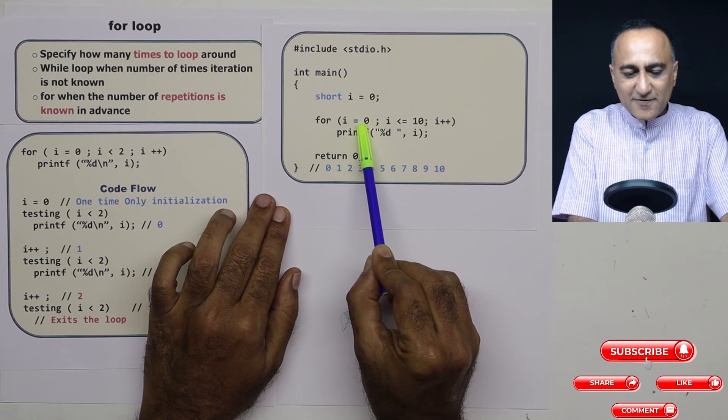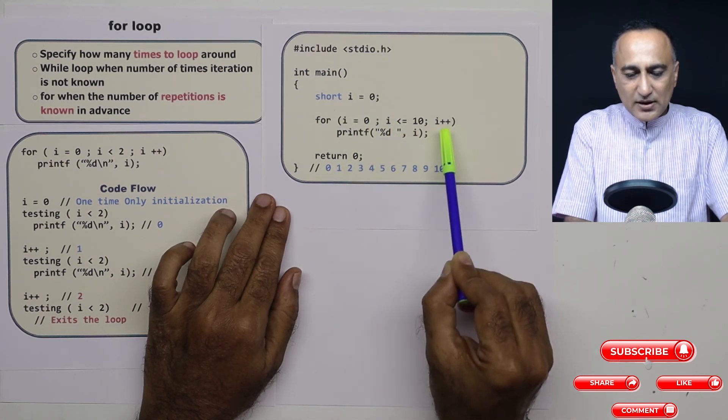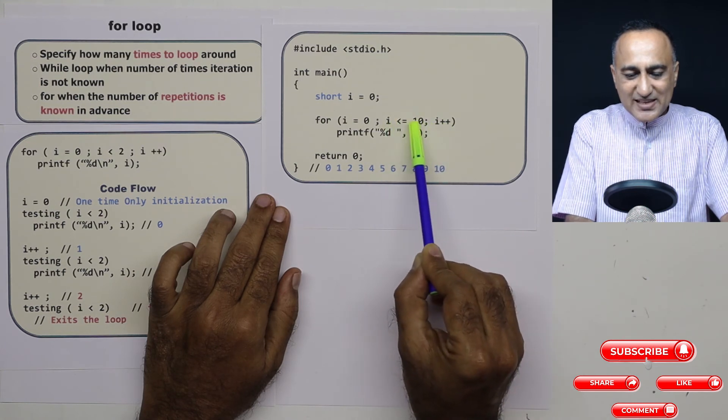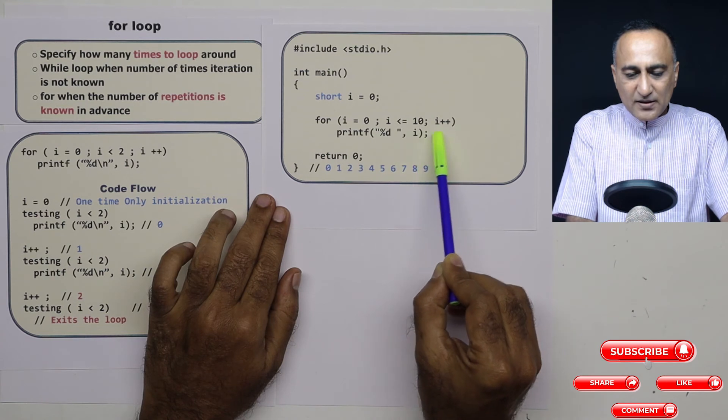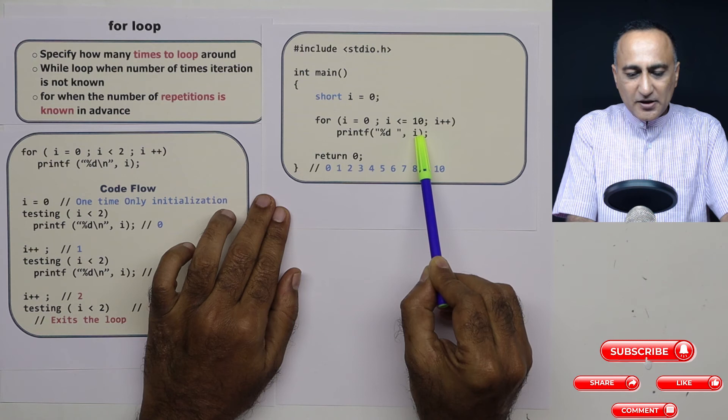So it will do the initialization first time, check the condition, print i as zero. Increase i by one, i becomes one. One is less than or equal to ten, so it will print one. Then i becomes two. Two is less than or equal to ten, so it will print two.